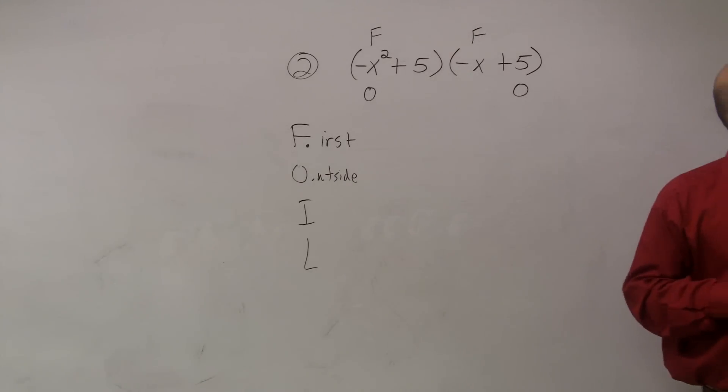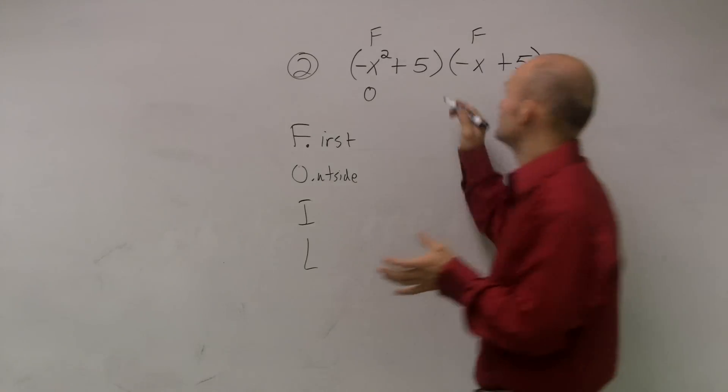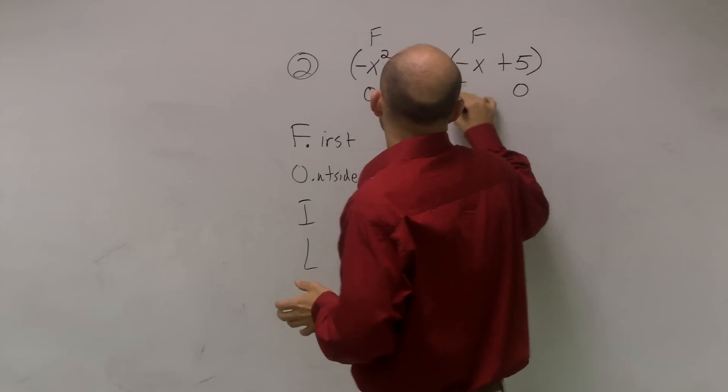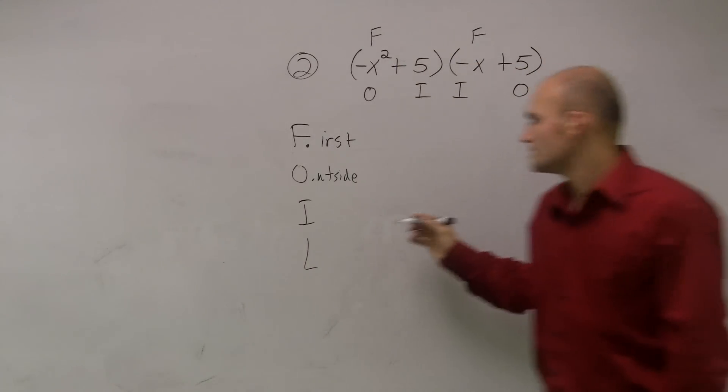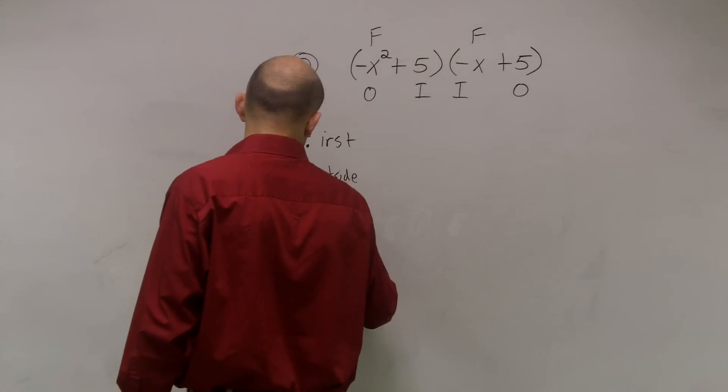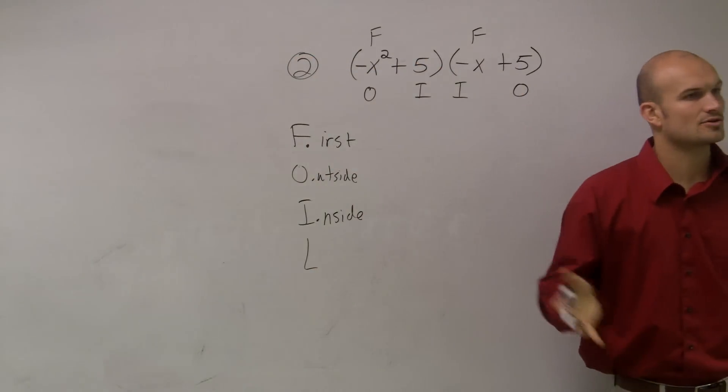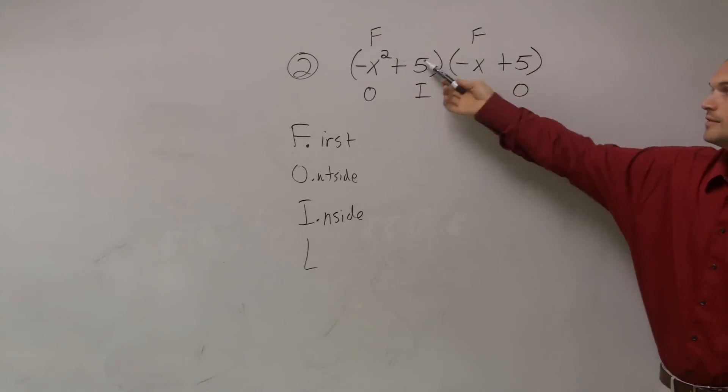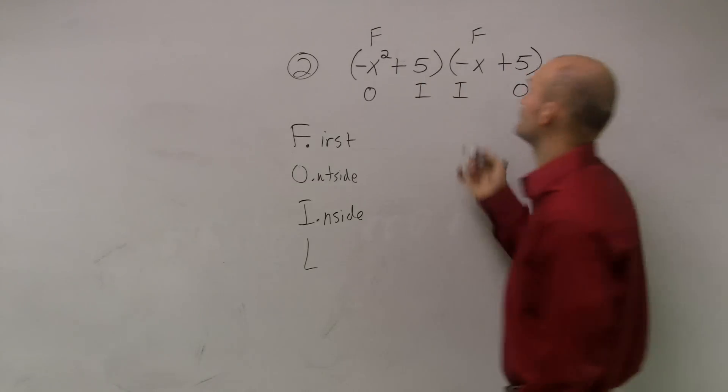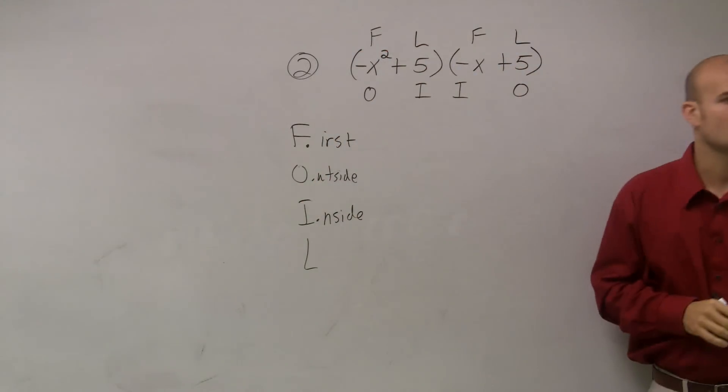Then I represents the inside terms. If those are on the outer, then 5 and negative x are going to be on the inside terms. So I just call these the inside. And then L represents the last. So again, if you're reading from left to right, if these two are your first two terms you read, these are going to be the last two terms you read.